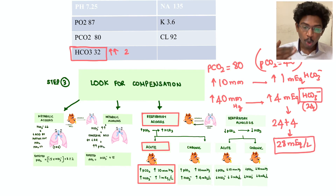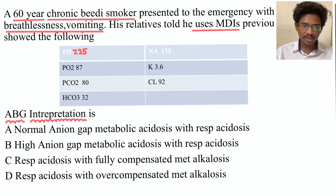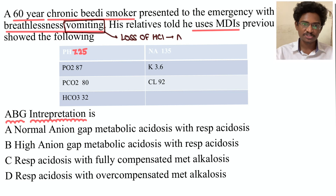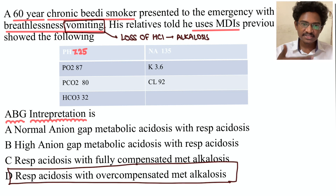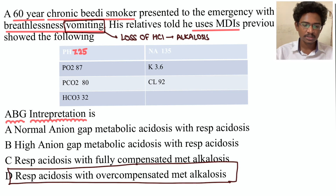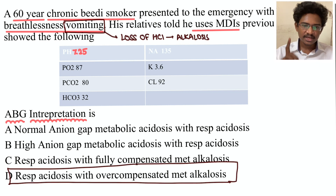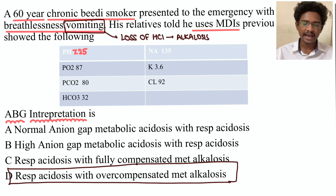Why is it over-compensated? Look at the history again — breathlessness and vomiting. Vomiting means HCl is being lost from the body, meaning alkali is being added — contributing to extra metabolic alkalosis. So the answer is D: respiratory acidosis with over-compensated metabolic alkalosis.